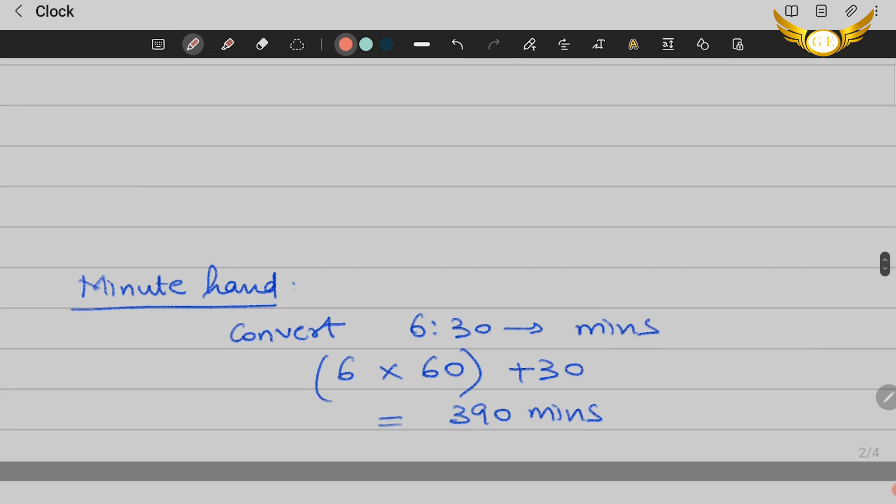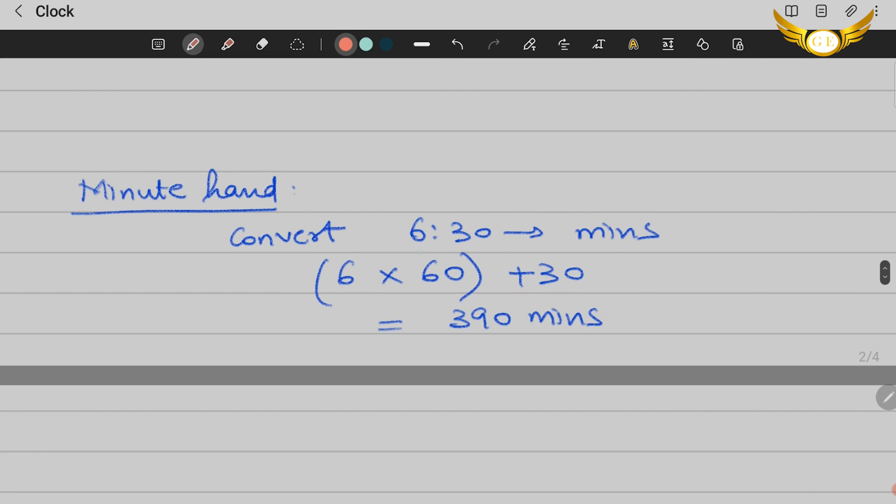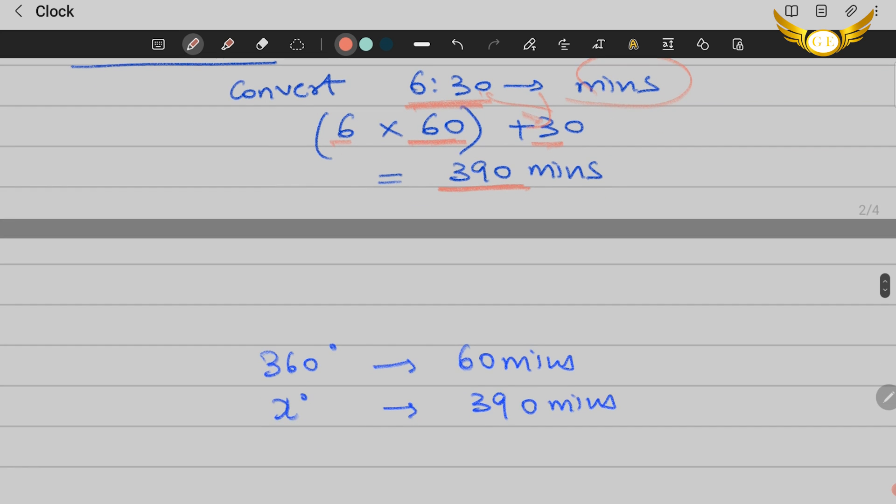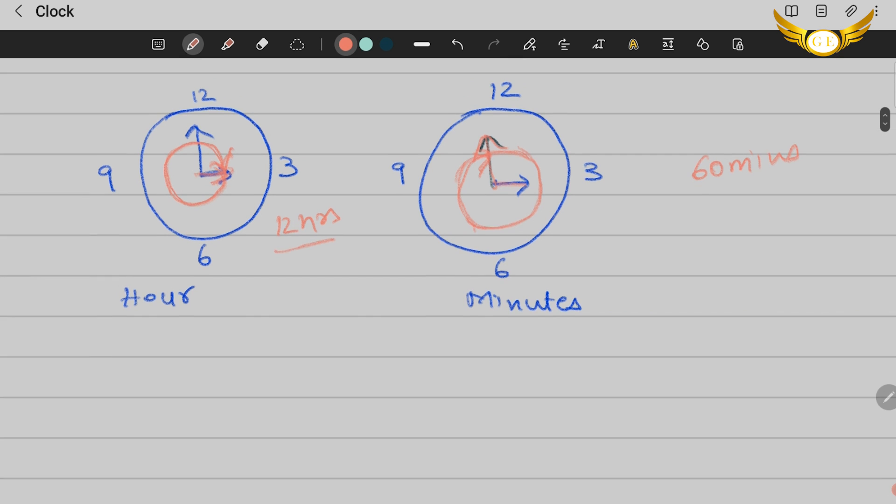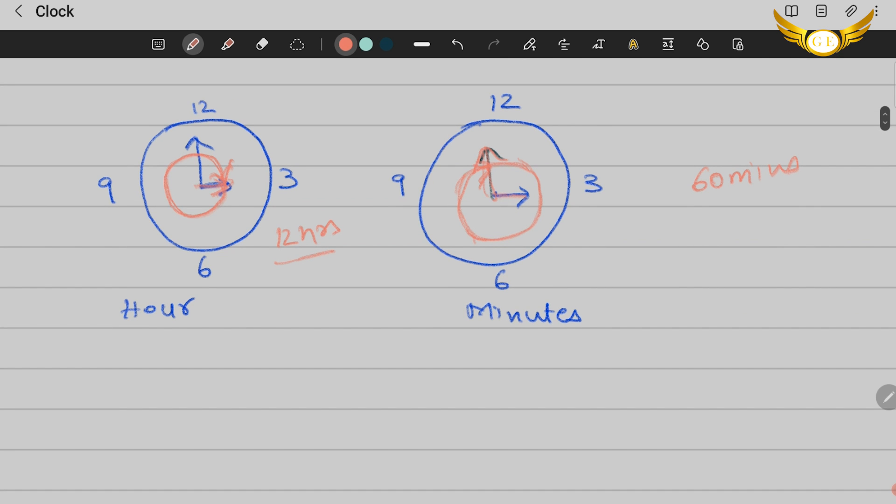Now let's work with the minute hand. Convert 6:30 to minutes: 6 into 60 plus 30 gives you 390 minutes. The minute needle goes 360 degrees in 60 minutes.